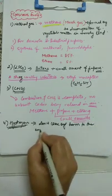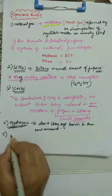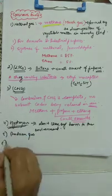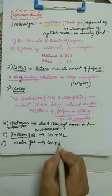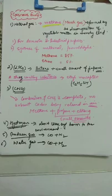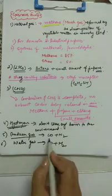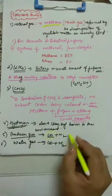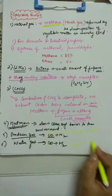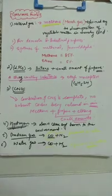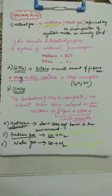Fifth one is producer gas and sixth one is water gas. Producer gas is a mixture of carbon monoxide plus nitrogen, and water gas is a mixture of carbon monoxide and H2. Due to the presence of carbon monoxide, both are poisonous in nature. Producer gas is also used as a reducing agent in some metallurgical operations.